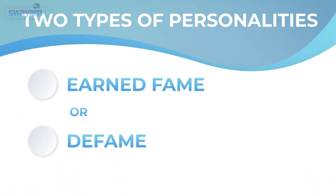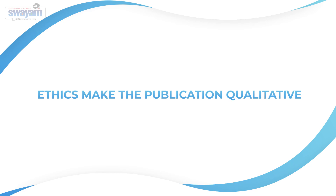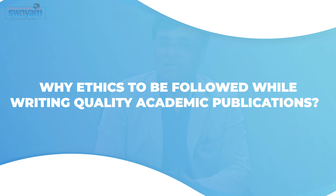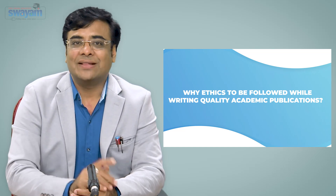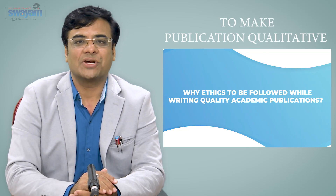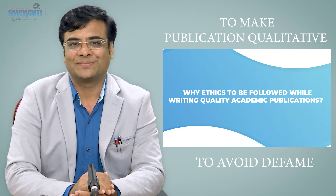People remember two types of persons or personalities — people who earn fame or defame. Publication can earn you reputation, but if you are not careful, it may defame you. One should try his or her best to make one's publication as qualitative as possible. There are several factors which make a publication qualitative, and one of the most crucial factors is publication ethics. We are going to focus on ethics to be followed while writing quality academic publications.